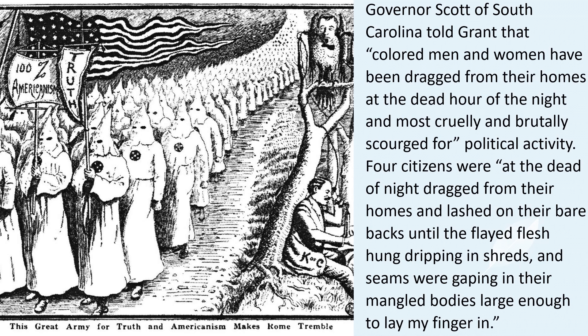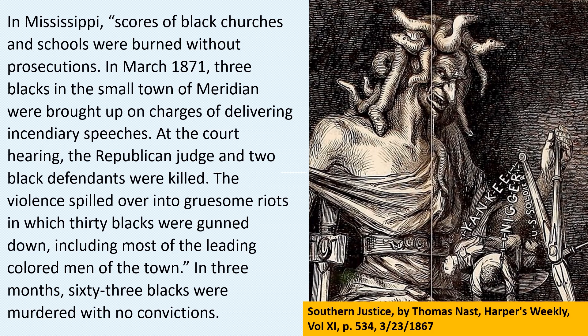Holden feared the Klan would overwhelm the 600 soldiers serving under him. The secret society could flout local courts with impunity because witnesses were too terrified to testify against Klan members, and juries were reluctant to convict them of serious crimes. Sometimes witnesses were murdered. Governor Scott of South Carolina told Grant that colored men and women had been dragged from their homes in the dead of night and most cruelly and brutally scourged for political activity — four citizens were lashed on their bare backs until the flayed flesh hung dripping in shreds. In Mississippi, scores of black churches and schools were burnt without prosecutions. In March 1871, in the small town of Meridian, three blacks were brought up on charges of delivering incendiary speeches; at the court hearing, the Republican judge and two black defendants were killed, and 30 blacks were gunned down in subsequent riots. In three months, 63 blacks were murdered with no convictions.